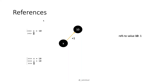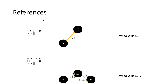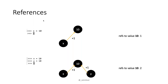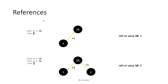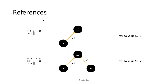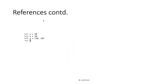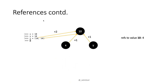What happens when you do 'y equals x'? You may think it creates another object, but it does not — it just points to the same object and increments the reference count to two. Similarly, when you assign those same values in a list, it will increase the reference count by two more.